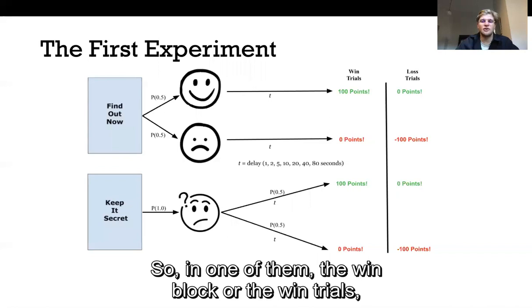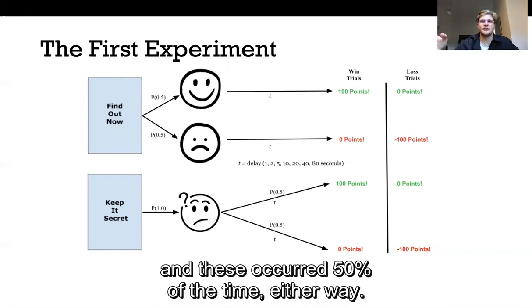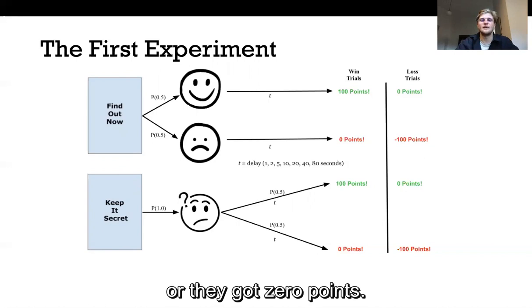We split these trials into two blocks. So in one of them, the win block or the win trials, people either won 100 points or they got zero points and these occurred 50% of the time either way. And in loss trials they either lost 100 points or they got zero points.